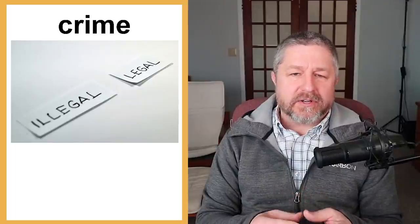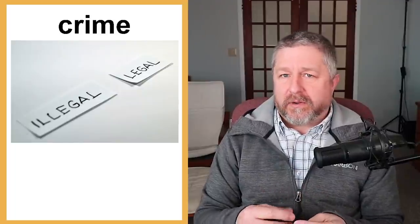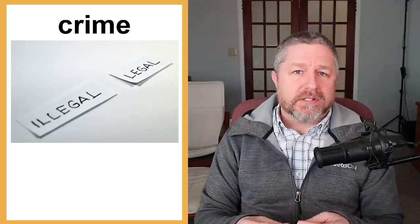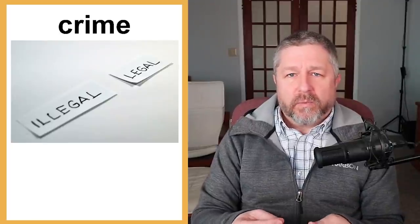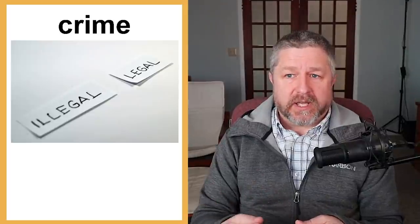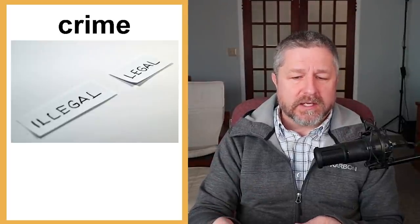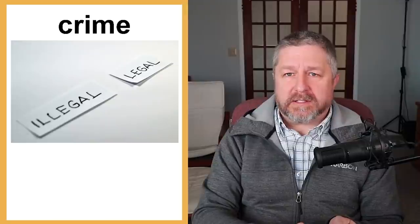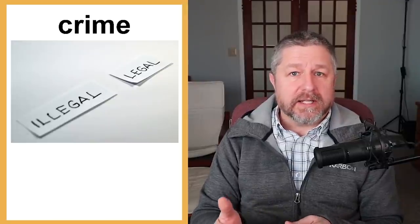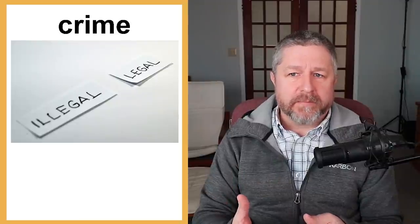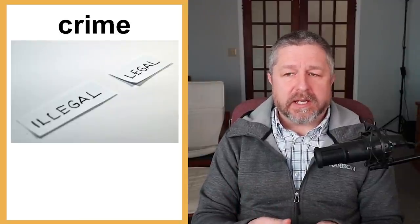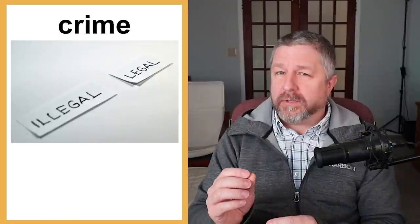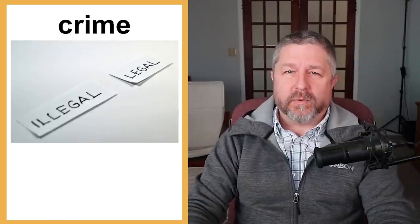First of all, a crime is any time you do something illegal. There are things that are legal, things that are allowed, and things that are considered crimes — they are illegal. We also sometimes say that they are against the law. It's against the law to do certain things in our societies. If you do those things that are against the law, we consider it a crime. You are committing a crime. You are breaking the law.